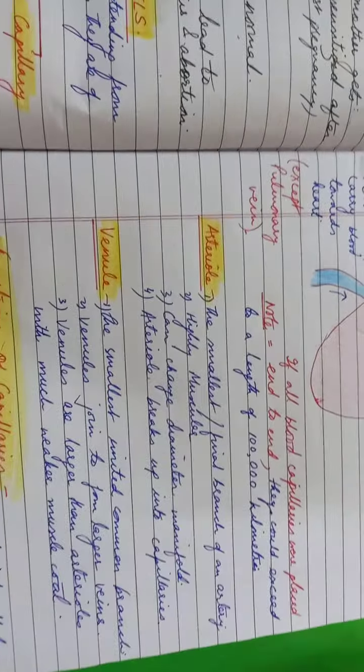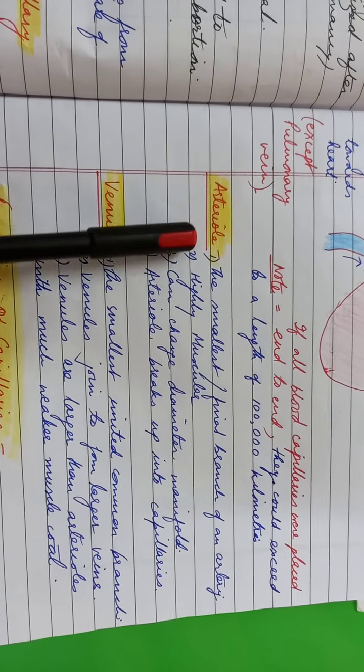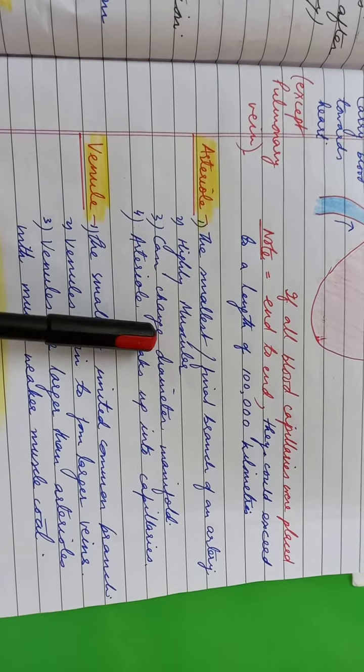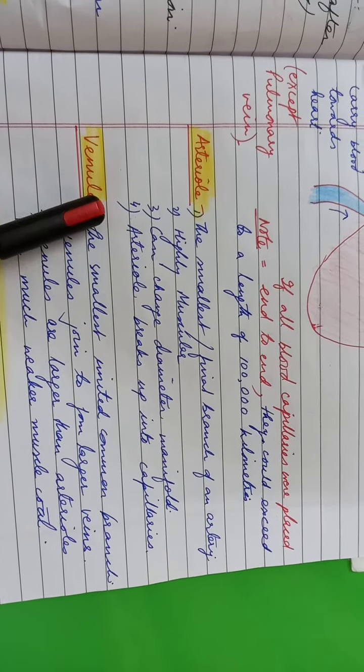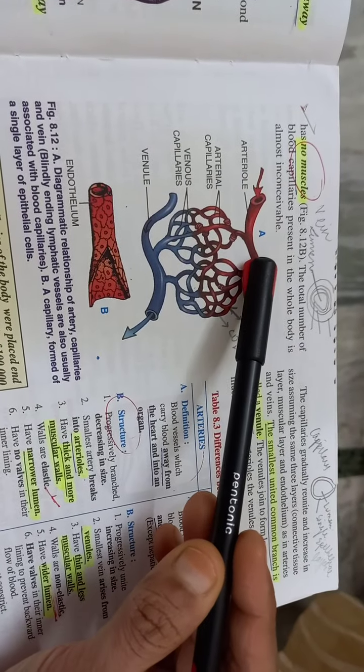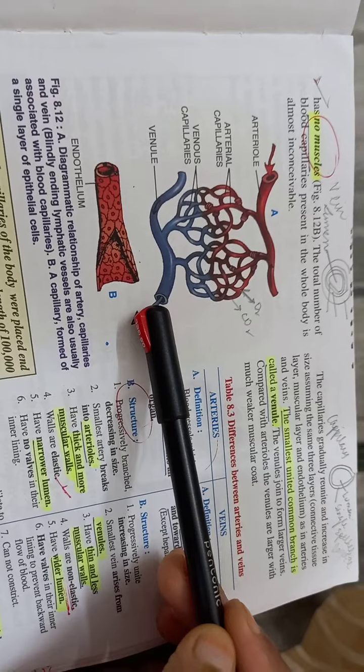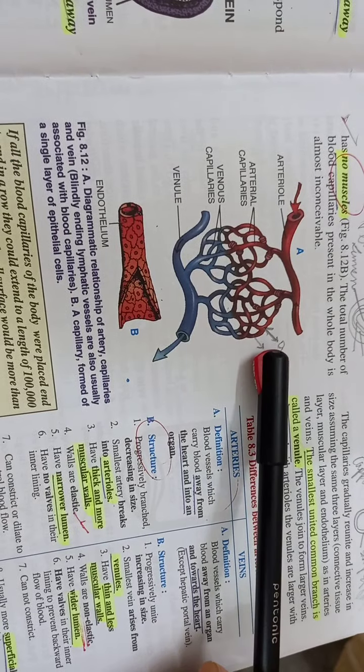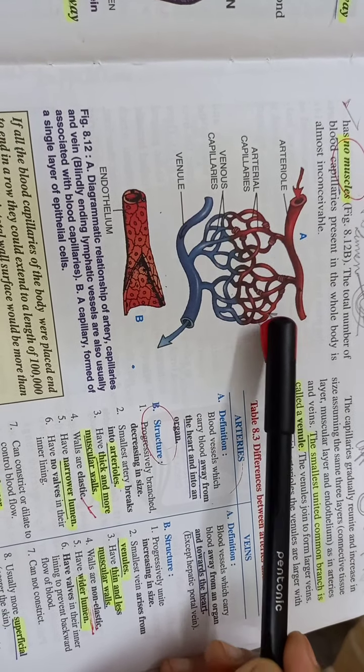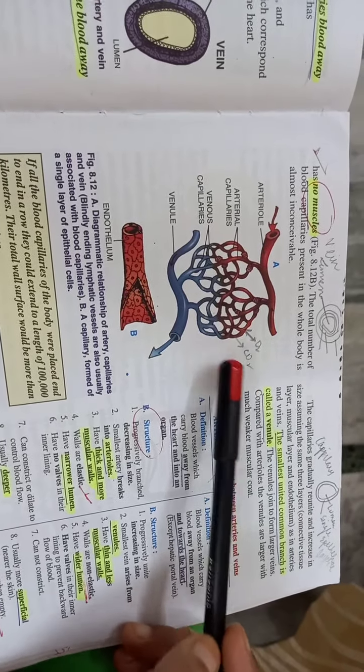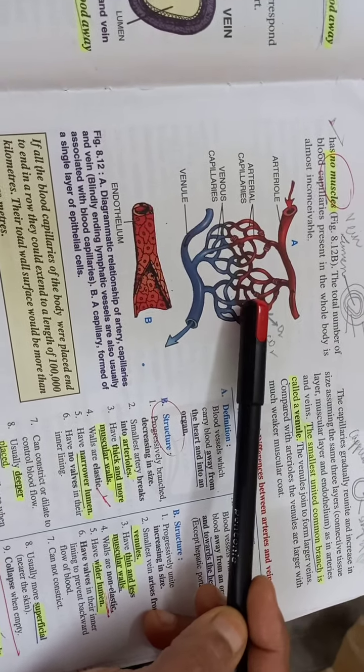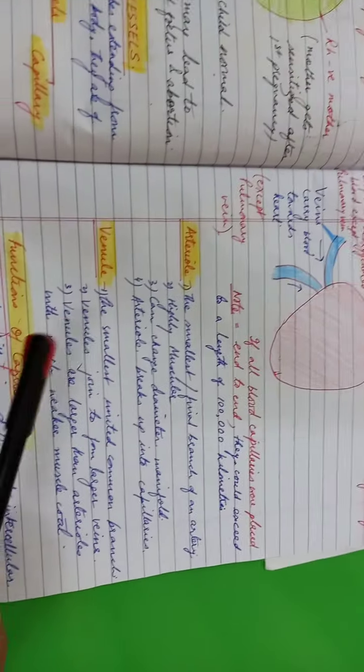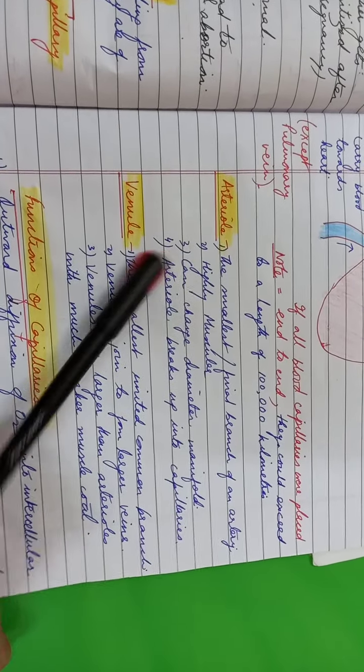Now here another term to discuss is an arteriole. So what is an arteriole? It is the smallest final branch of an artery. Arterioles, these are highly muscular, can change diameter manifold. An arteriole breaks up into capillaries. So you can see in this diagram here how an arteriole is breaking up into capillaries. Remember children, the blue color depicts the deoxygenated blood or in other words impure blood, whereas the red blood depicts the oxygenated or the purer blood.